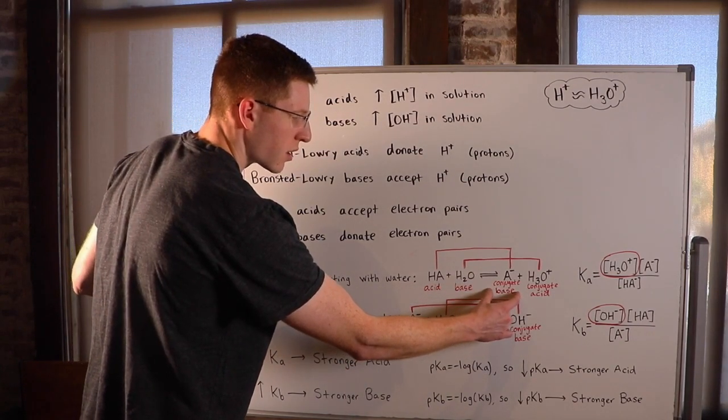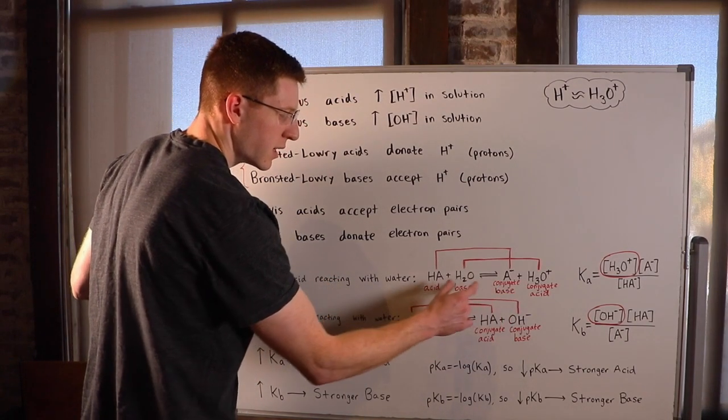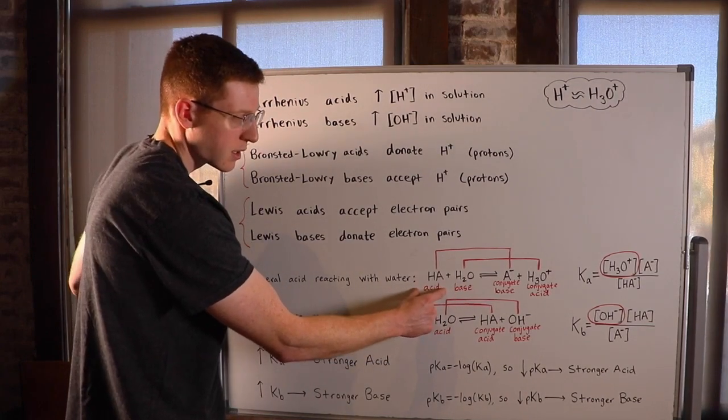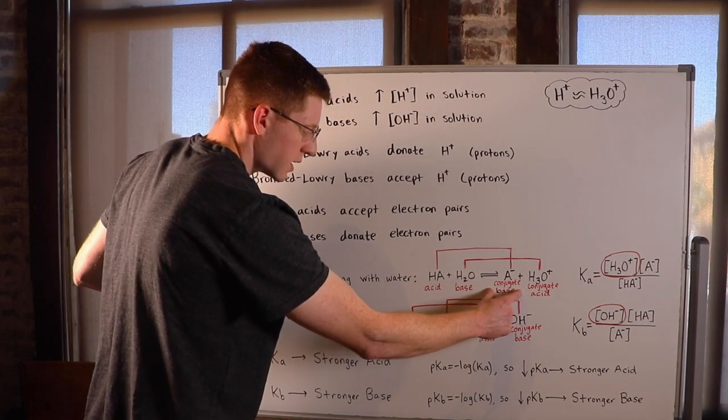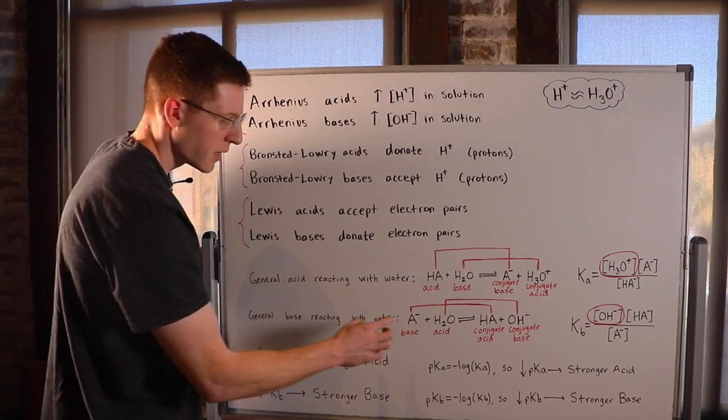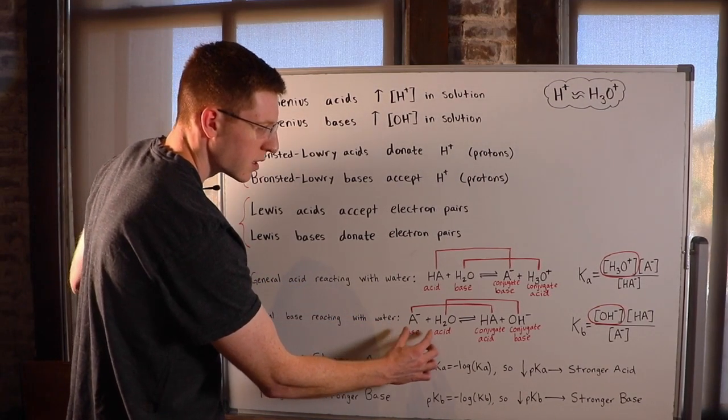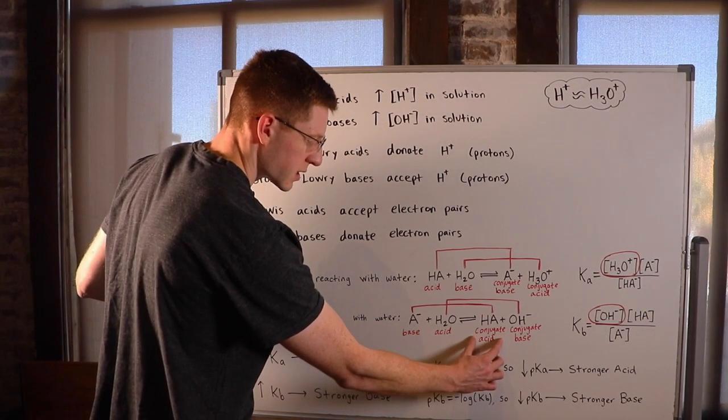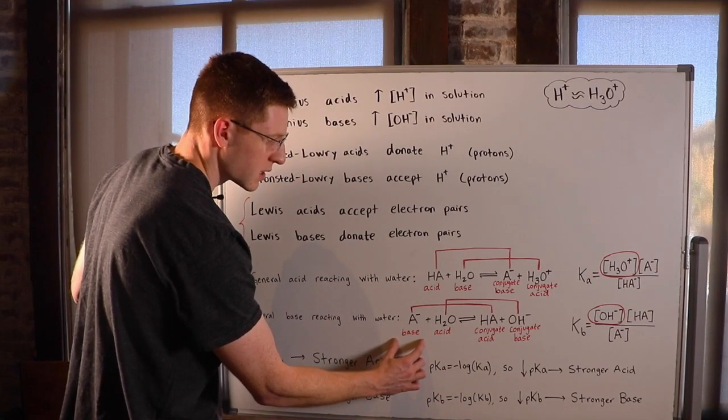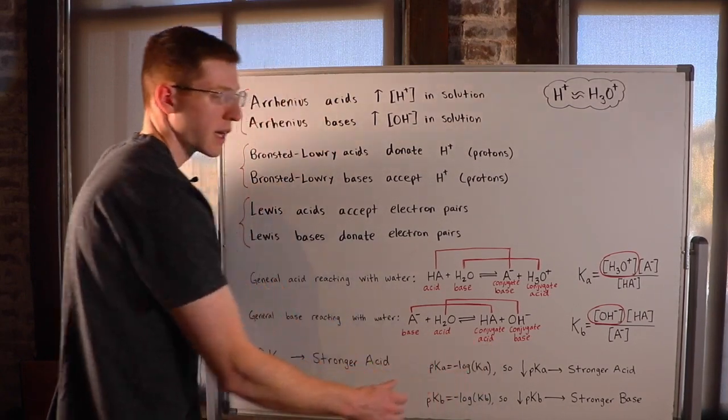One more thing I'd like to mention is that the stronger the acid, the weaker its conjugate base. Conversely, the weaker your acid, the stronger the conjugate base. And it works the other way around. The stronger the base, the weaker your conjugate acid. The weaker the base, the stronger your conjugate acid.